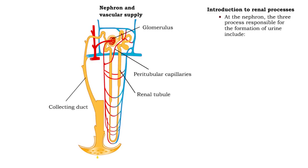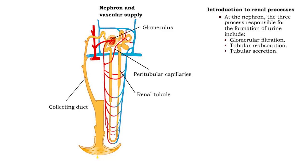Three processes occurring at the nephron are responsible for the formation of urine. They include glomerular filtration, tubular reabsorption, and tubular secretion.